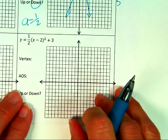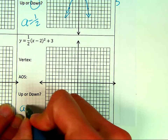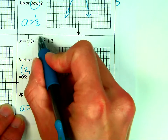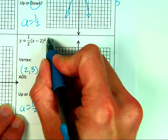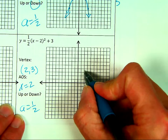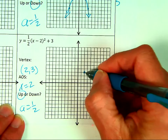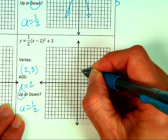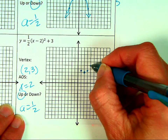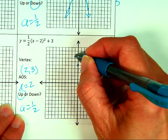Now let's do f(x) = ½(x − 2)² + 3. A is one half, so it's vertically compressed. The vertex is (2, 3) — remember it's always the opposite of what you see in parentheses. Axis of symmetry is x = 2, opens up. Instead of over 1 up 1, we go over 1 up one half. Then instead of up 3, we do half of that — 1 and a half. Then instead of up 5, we go up 2 and a half.